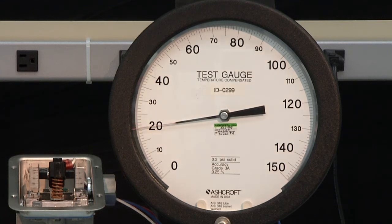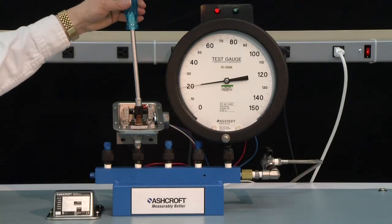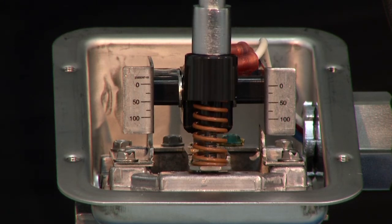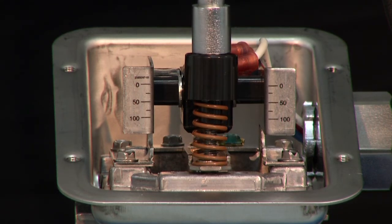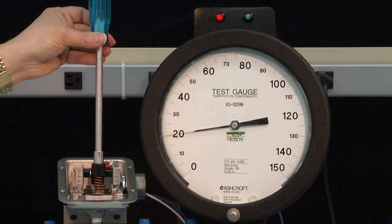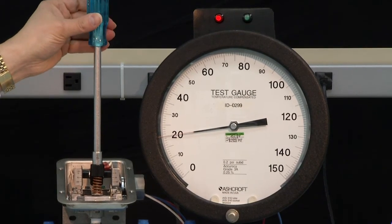With the pressure of 20 pounds we are now going to turn the adjustment knob counterclockwise or raising it up to lower the set point of the switch. We're going to keep going counterclockwise until we have the light turn on.